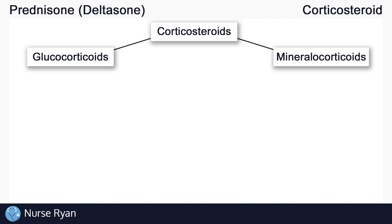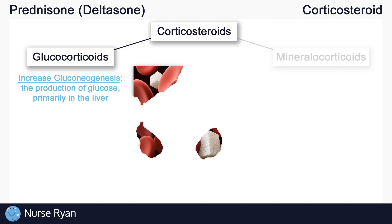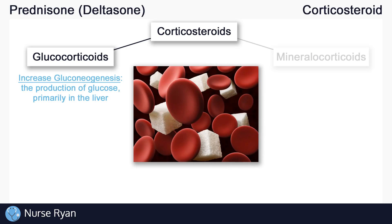Glucocorticoids get their name from their important role in glucose metabolism. Glucocorticoids increase gluconeogenesis, which is the increase in the production of glucose, primarily in the liver. This can lead to higher blood glucose levels.